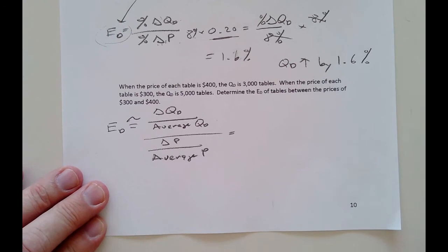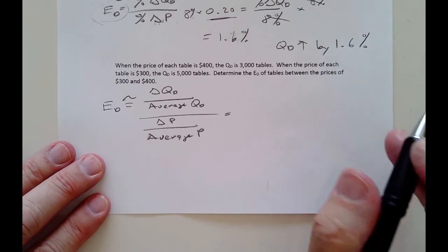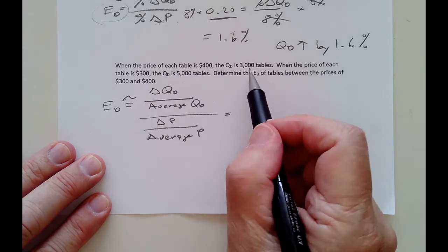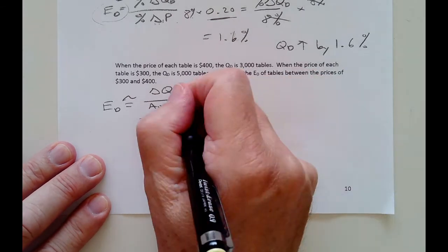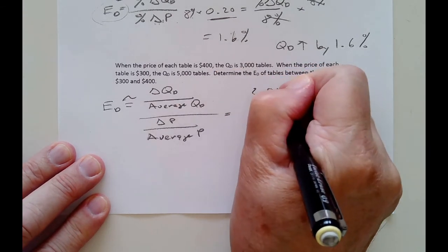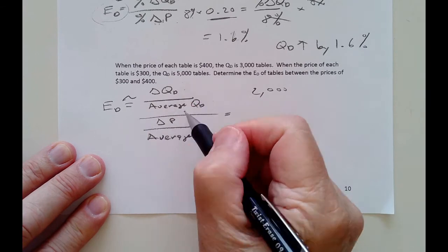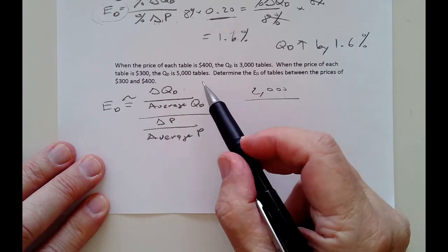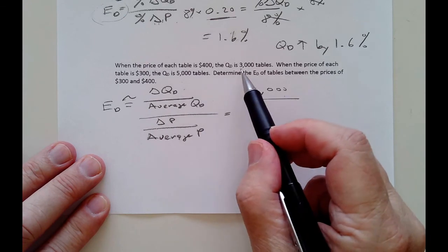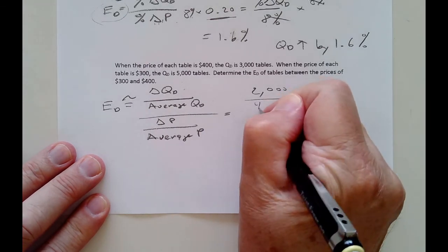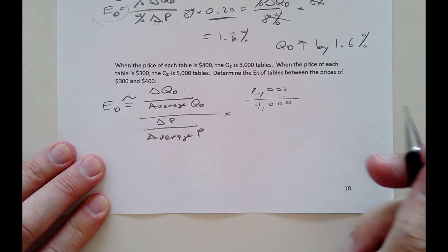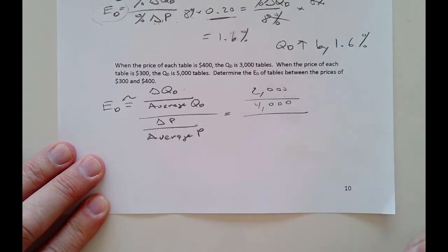So the change in the quantity, we're going from 3,000 to 5,000, or 5,000 to 3,000. Either way, the difference is 2,000, so the change is 2,000 tables. We can leave the tables off, because again, we have tables over tables, it's all going to cancel. And then the average of these two numbers, 5 and 3 is right smack in the middle. That would be 4,000. If you can't see it, add them up and divide by 2. And when I see zeros like that, I just want to cross them out.